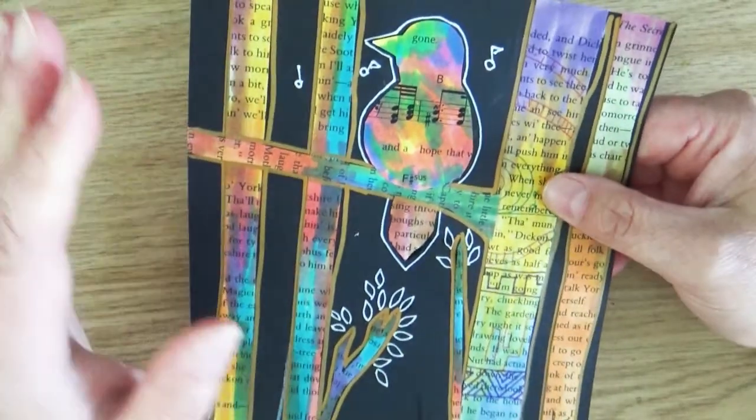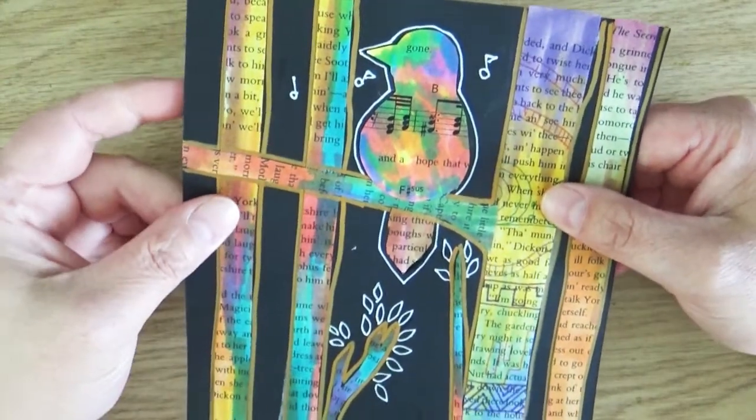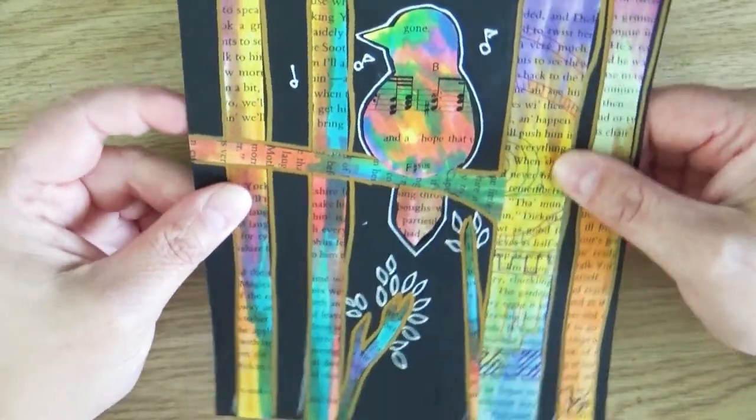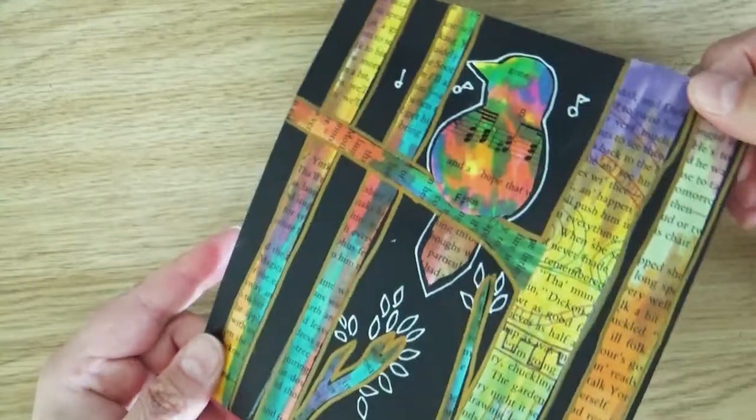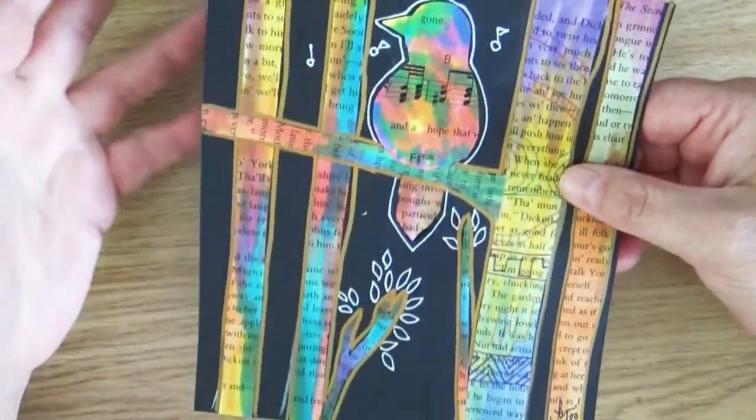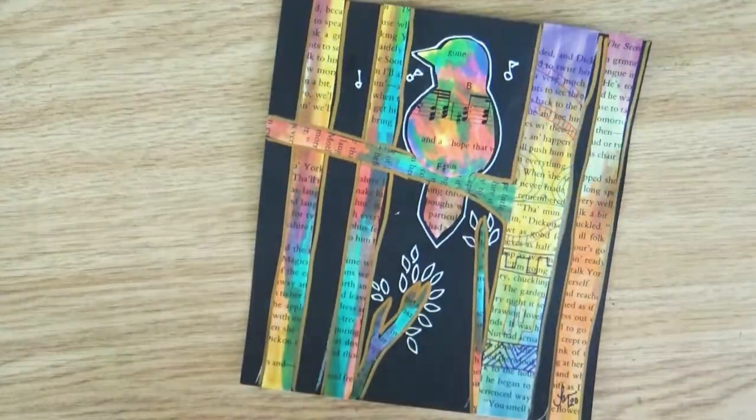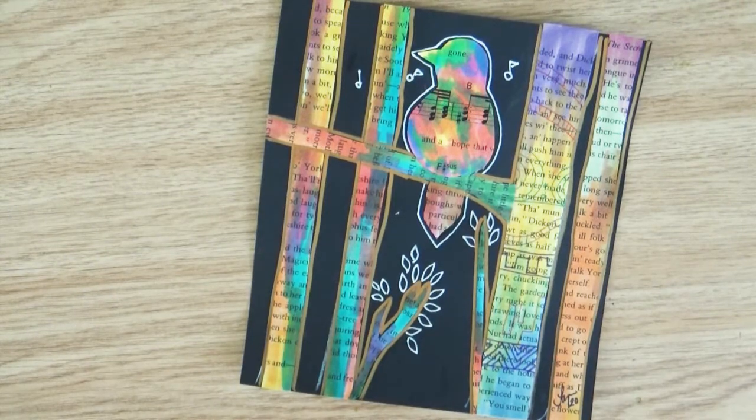Welcome back everyone to the Coos Art Museum's online art classes where we bring the art into your home. Today's art project is going to be using some supplies that you might not think about using for art. We're going to make a really cool collage piece and we're going to be using scrap pieces of paper. So let's go ahead and jump in to the supply list.